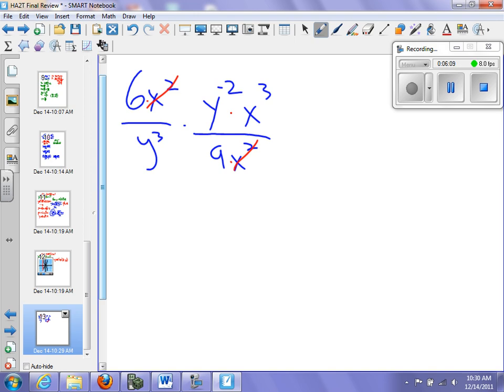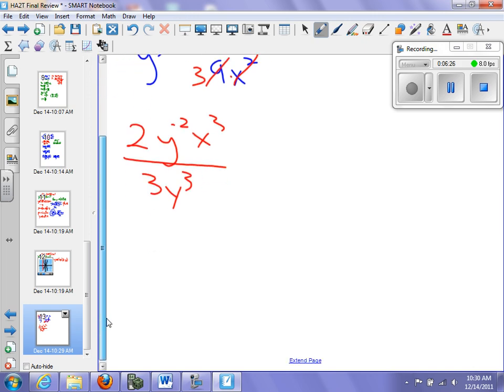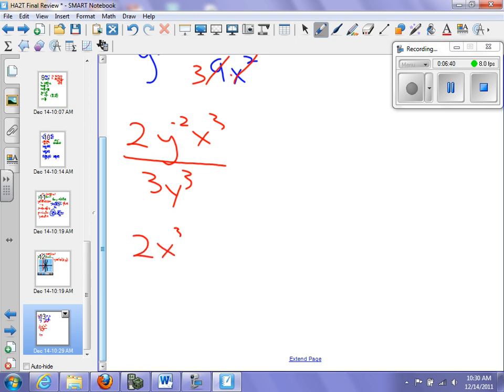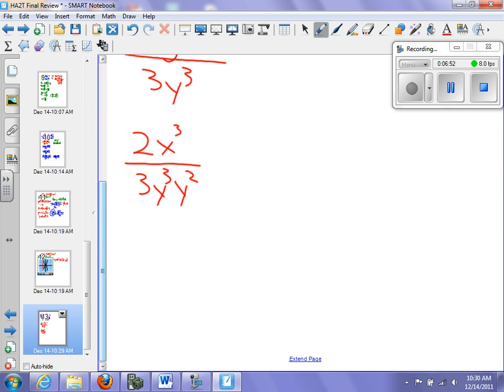I see I have a 6 and a 9, so I'm going to change that to a 2 and a 3. So I have 2y to the negative 2x cubed over 3y cubed. I have a y to the negative 2. I can't have any negative exponents if I'm simplifying, so I'm going to move that to the bottom. I'm going to have 2x cubed over 3y cubed and then y squared. My y cubed and y squared have a similar base, so I'm going to have 2x cubed over 3y to the fifth. I can't simplify that anymore because they're different bases. So that's about as far as I can take it. Did I get the right answer? Yes.